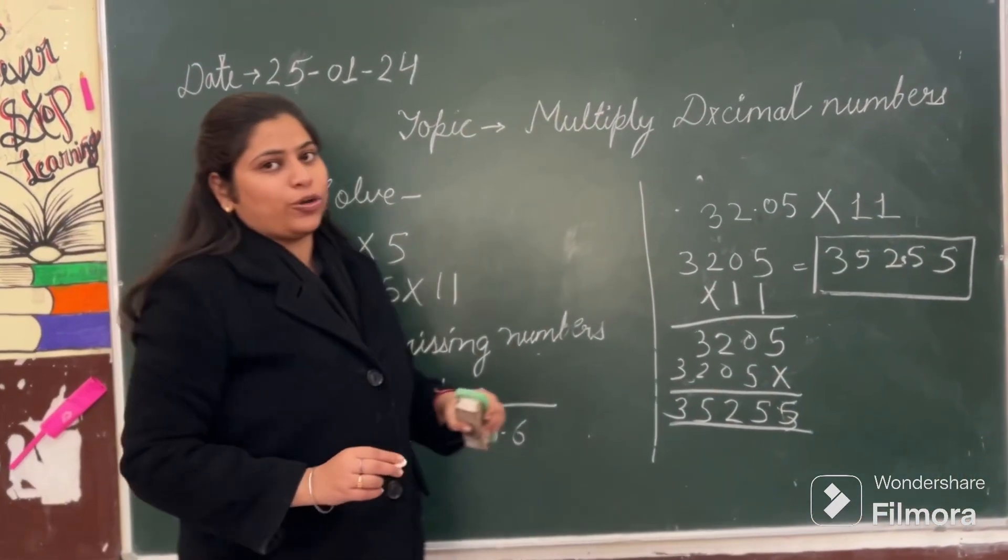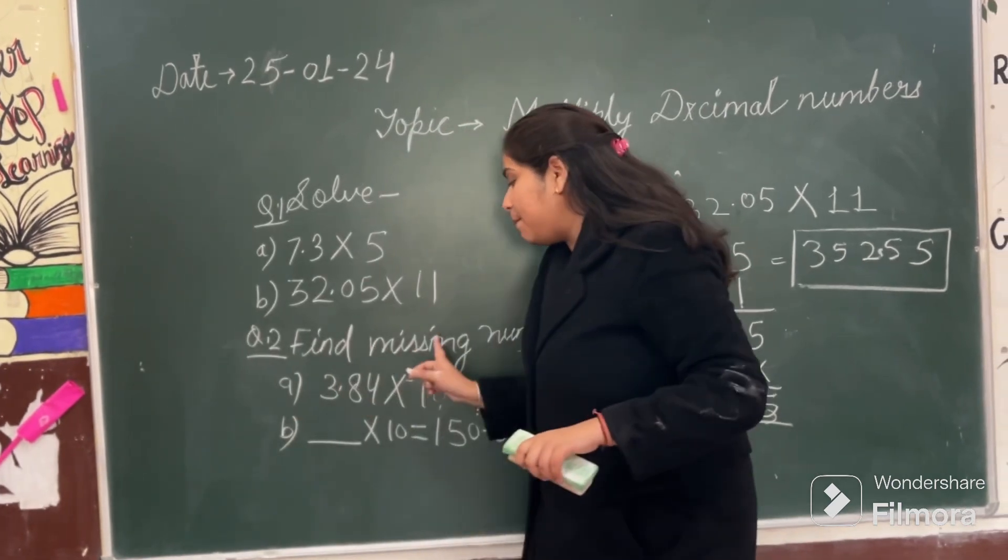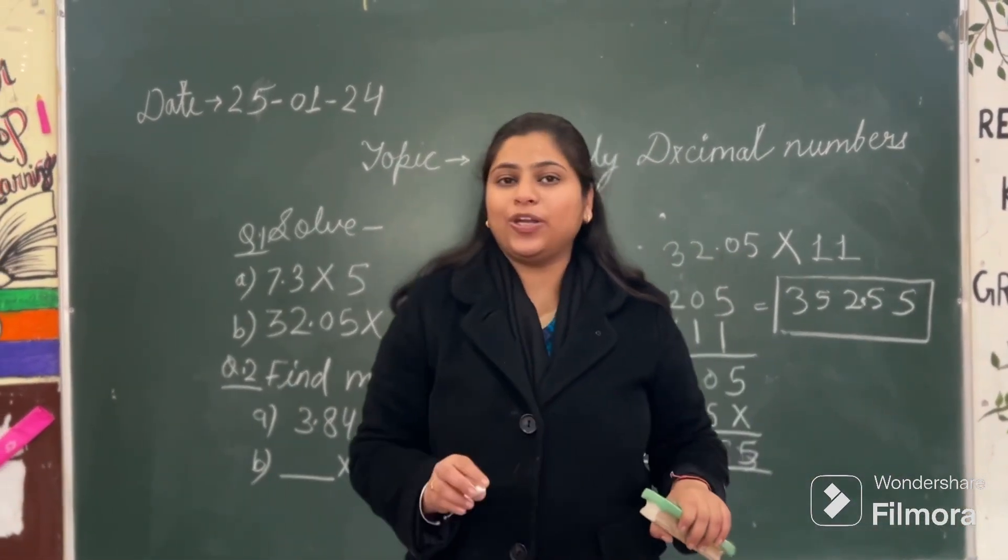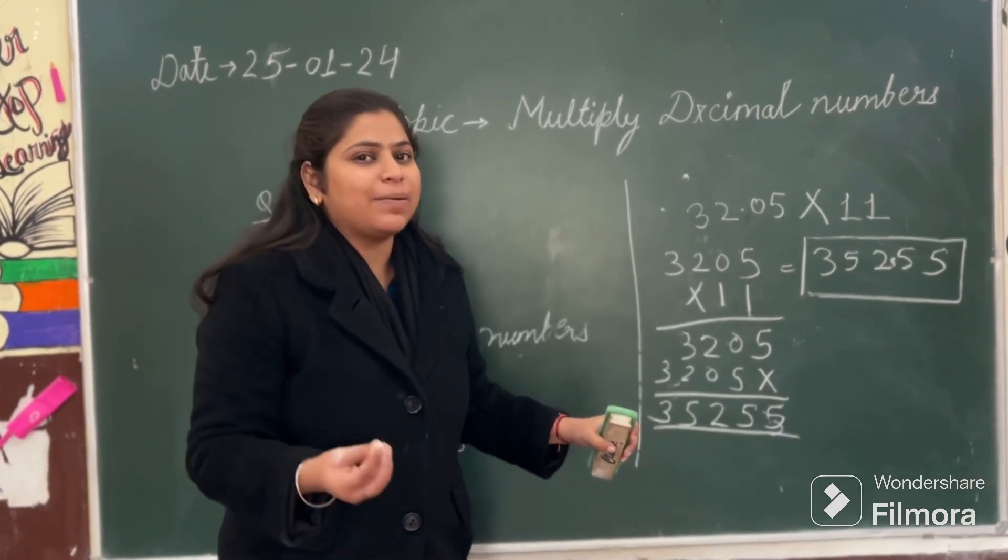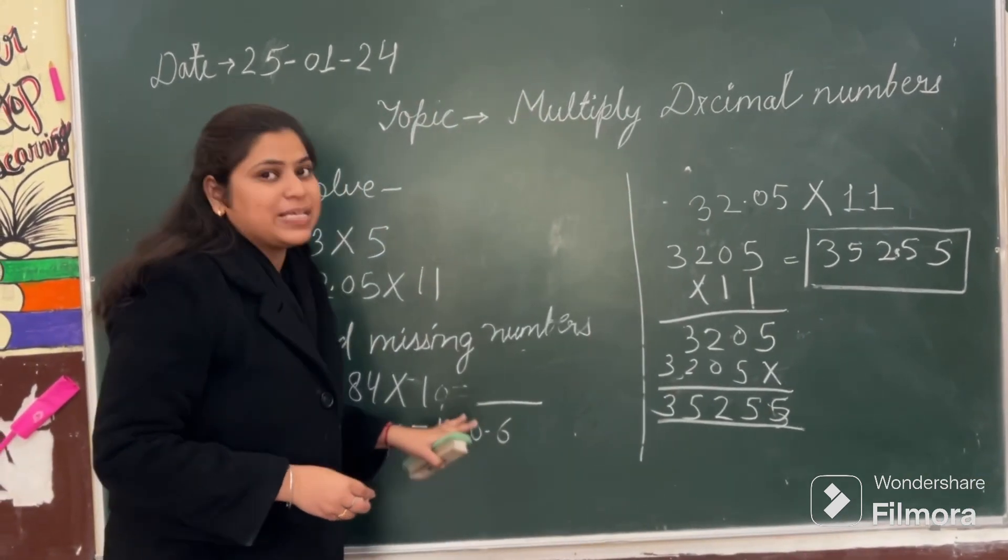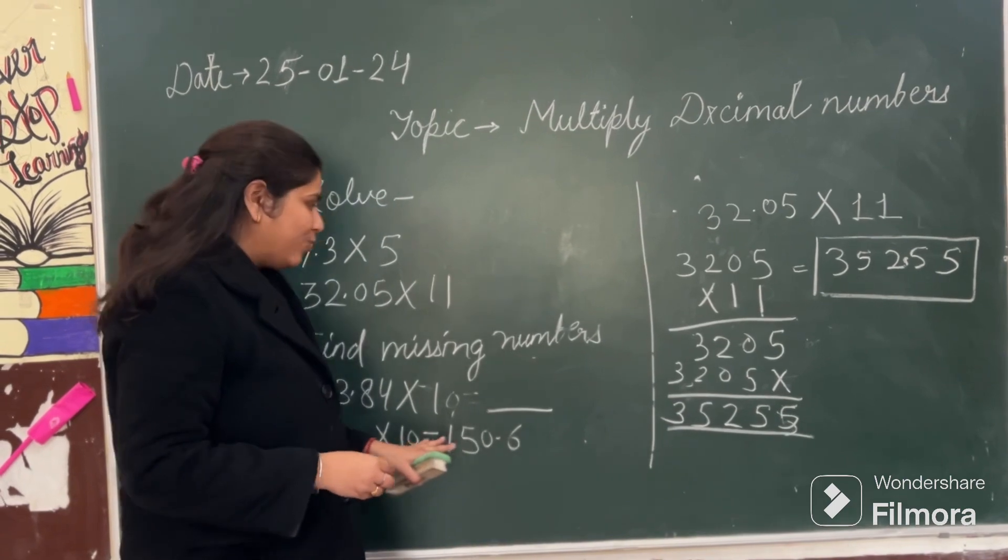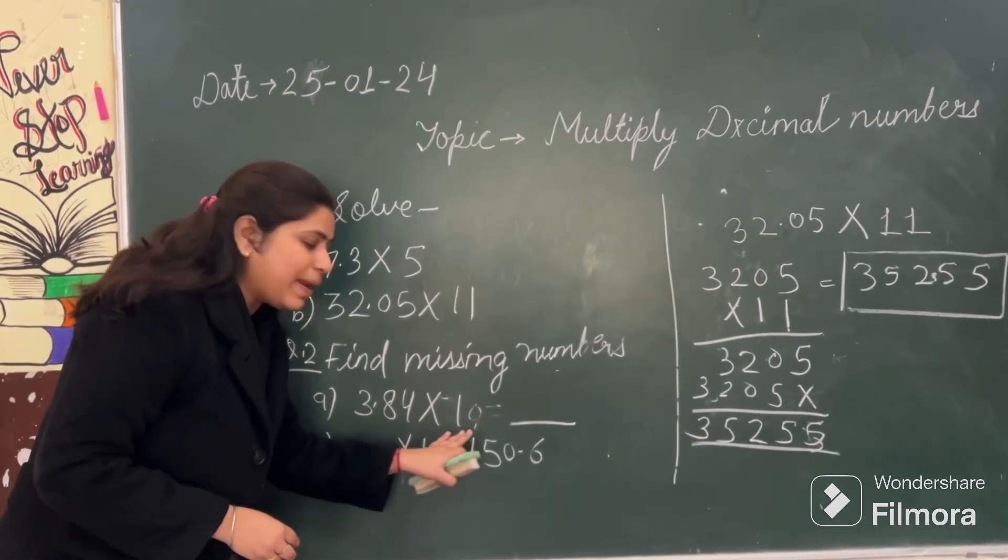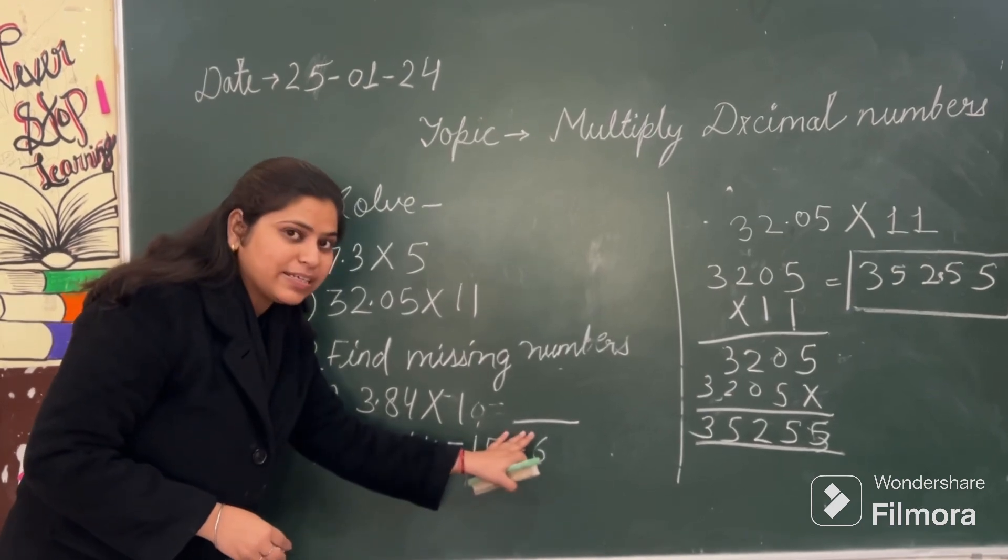Now I am having one more question for you. Find missing numbers. I have noticed this in the class also that we know how to multiply, but sometimes we get confused in the missing number. So let's find out how to do it. 3.84 multiply by 10. What will be the answer? Very easy.